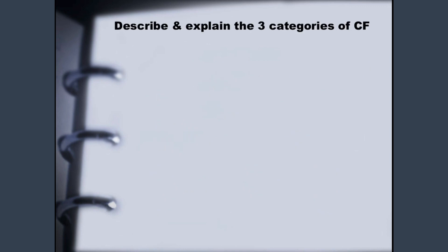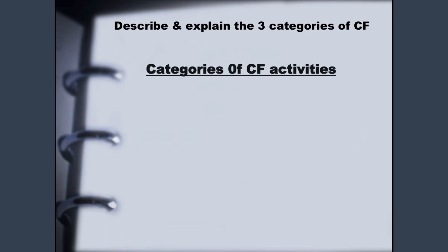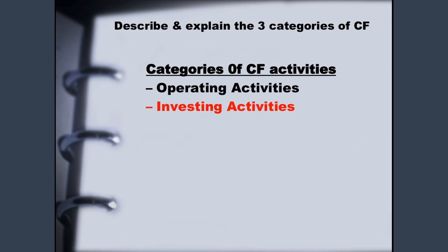Our next section describes and explains the three categories of cash flow statement activities: operating activities, investing activities, and financing activities. As I said initially, our lesson focuses on investing activities, so we will break down this section.